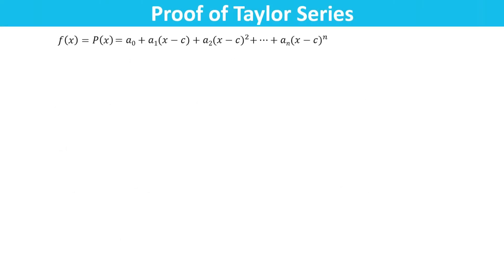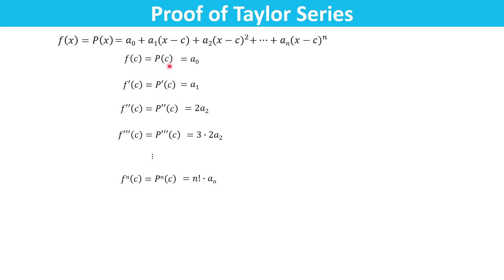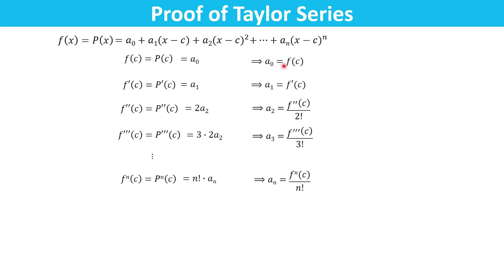As per the imposed requirements, f of c equals p of c, and similarly the first, second, third, and nth derivative of p at x equals c equals the corresponding derivative of f at x equals c. This gives us: a₀ equals f of c; a₁ equals f prime of c; a₂ equals f double prime of c divided by 2 factorial; and so on — aₙ equals the nth derivative of f at c divided by n factorial.